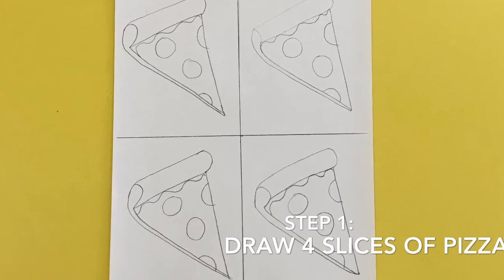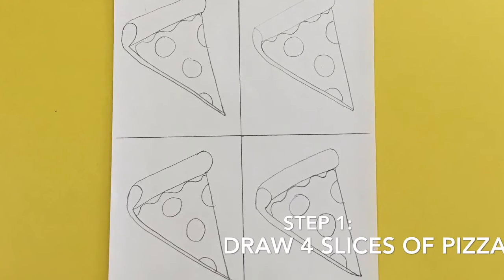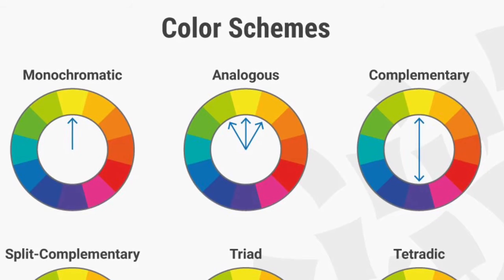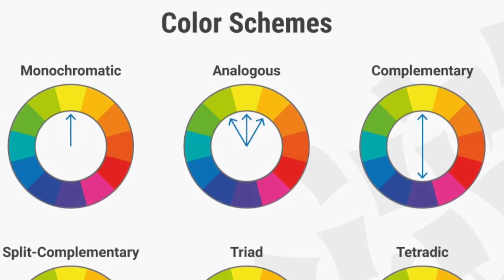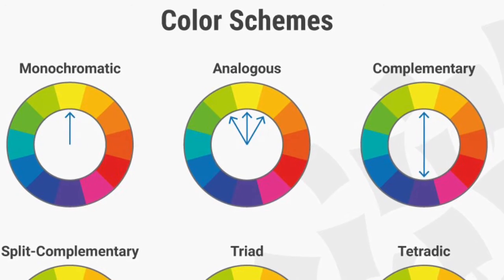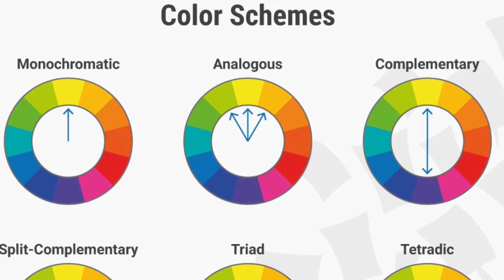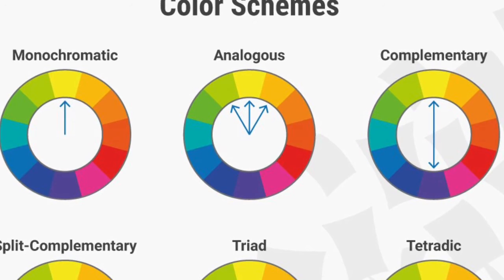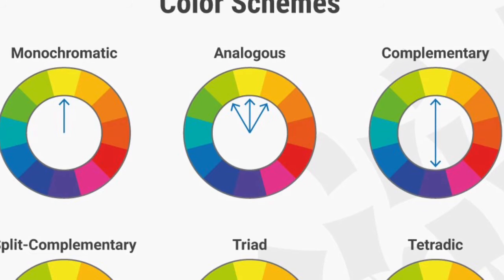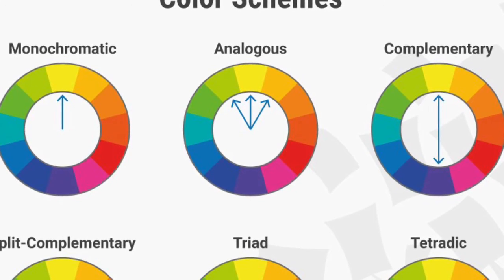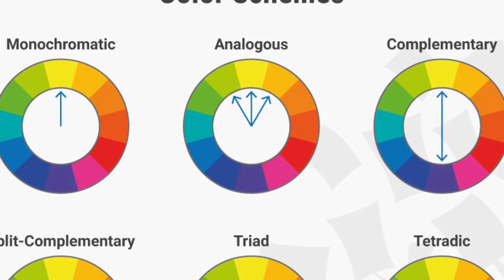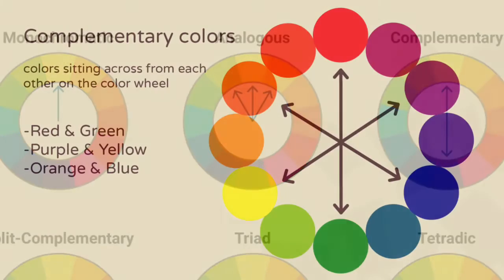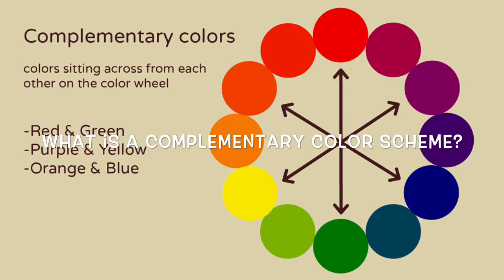The next step is we're going to be adding some bright color. Artists use all kinds of color schemes in their art. Earlier in the year we used a monochromatic color scheme for our city project, which means different tints and shades of one color. For this project we are going to use a complementary color scheme.